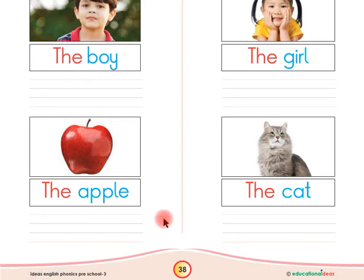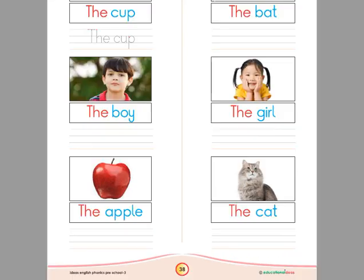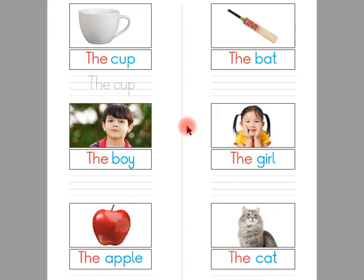Look at this, children: the cat. Listen again, children: the cat. Listen one more time, children: the cat. Now say with me, children: the cat. Say again: the cat. Now read with me, children: the cat. Read again, children: the cat. Children, now you have to write 'the cat' here in between these four lines by yourself.